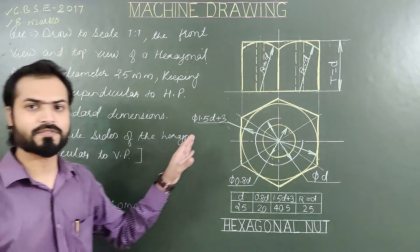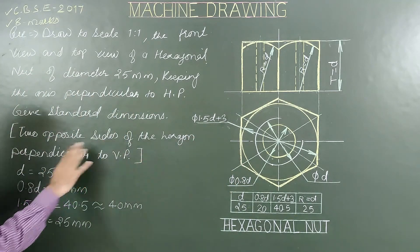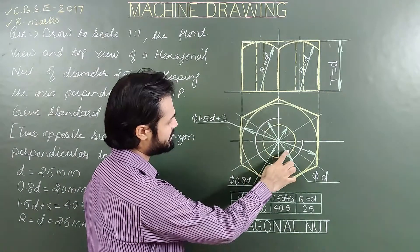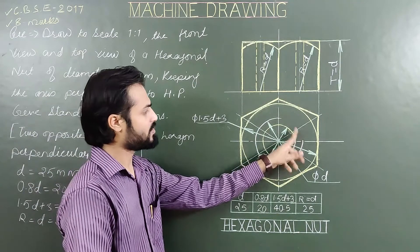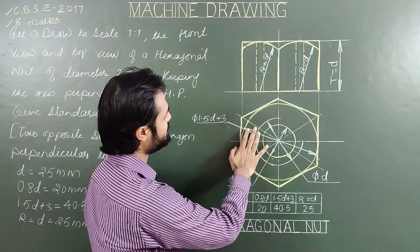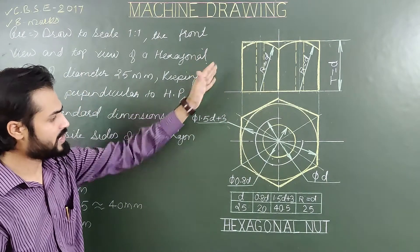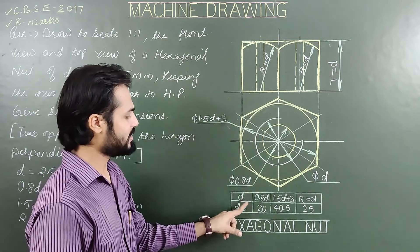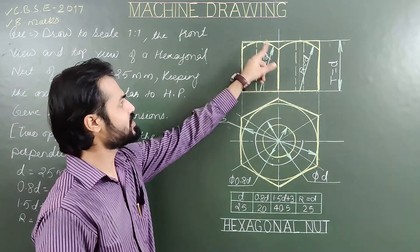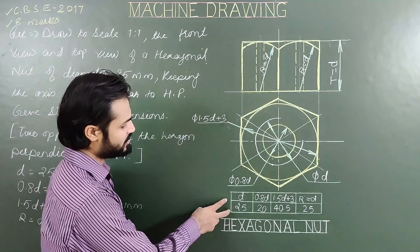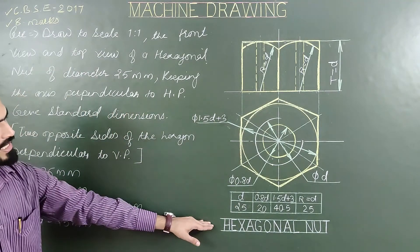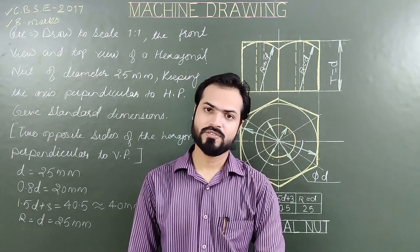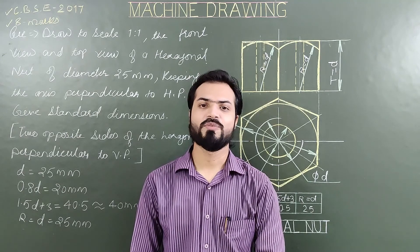This is the final answer of this problem with the new condition: two opposite sides of the hexagon perpendicular to VP. Please practice this problem on your sheet. Start from the top view — first circle, second circle (incomplete in first quadrant), third circle, then the hexagonal part, then project the front view. Use proper pencils: green for light pencil, white for medium, yellow for dark HB. Draw the table for standard dimensions and write the heading 'Hexagonal Nut'. For any doubts in machine drawing or engineering graphics, please write in the comment box. Thank you.